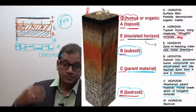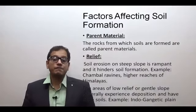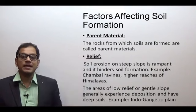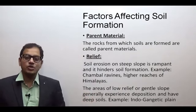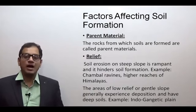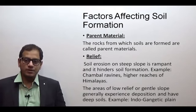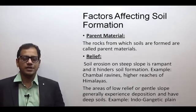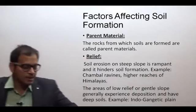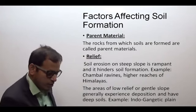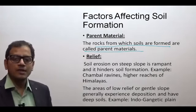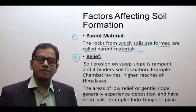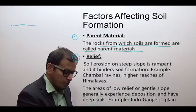Now, what are the different factors which affect the formation of a soil? The first factor is the parent material — the rock structure from which the soil is derived. The rocks from which soil is formed are known as parent material. The second factor is relief — meaning slope.